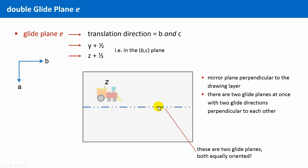Okay, let's look at this scenario. This dashed point line marks two glide planes simultaneously. Both are oriented perpendicular to the drawing layer. Now, we will apply the first glide plane of this set, the glide plane B. This means mirroring and then translation by one half along the B direction. So, this is the result of the glide plane B.